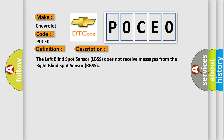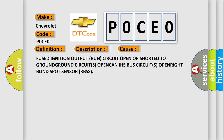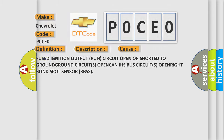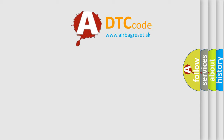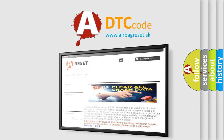This diagnostic error occurs most often in these cases: fused ignition output run circuit open or shorted to ground, CAN bus circuits open, or right blind spot sensor (RBSS) failure. The Airbag Reset website aims to provide information in 52 languages. Thank you for your attention and stay tuned.